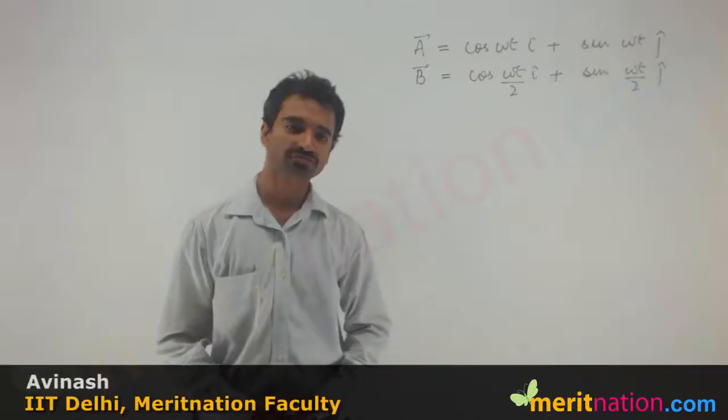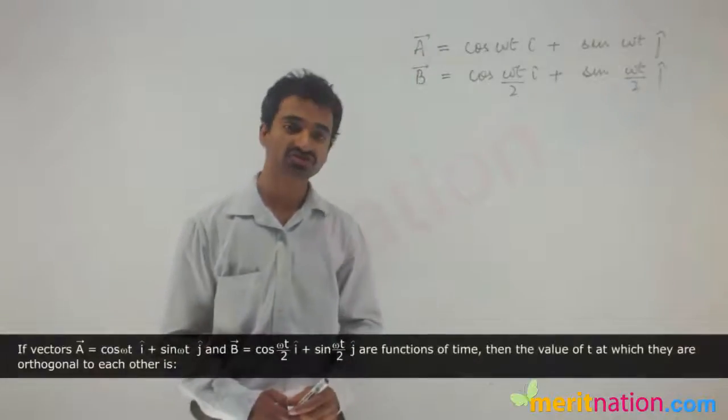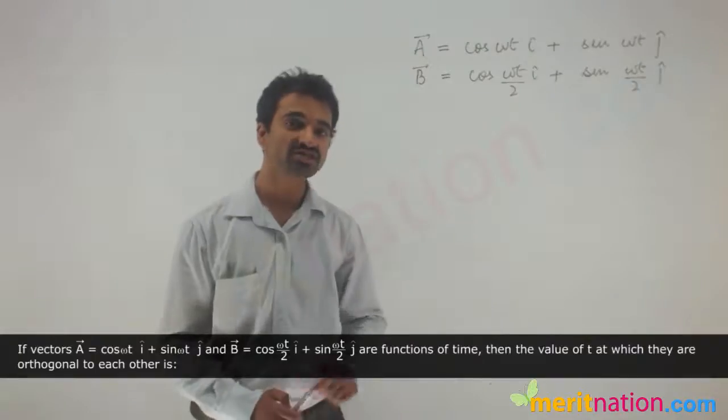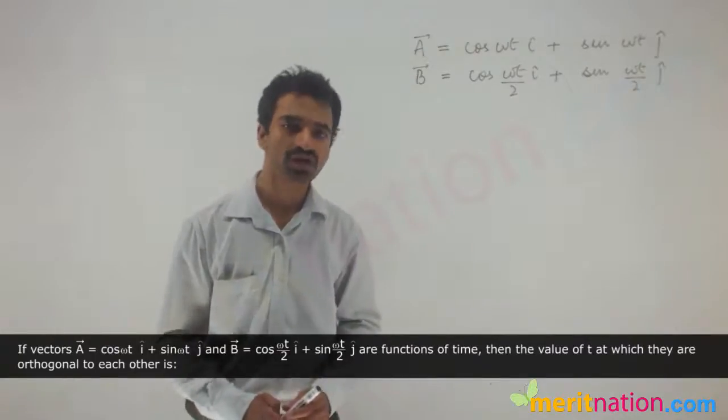Hi, let's discuss this thread. In this question we are given two vectors a and b which are a function of time and we have to determine the value of time at which these two functions become orthogonal, as in they become perpendicular to each other.